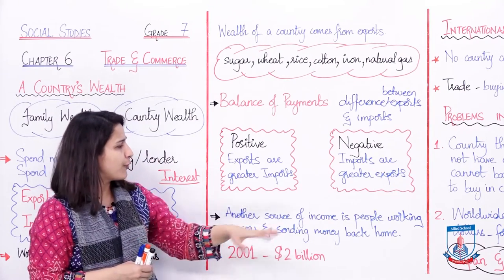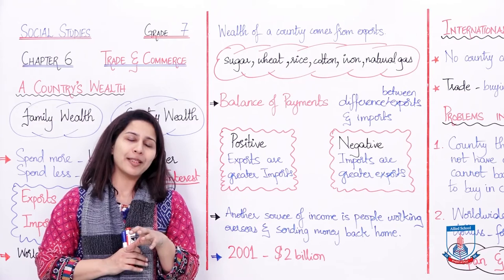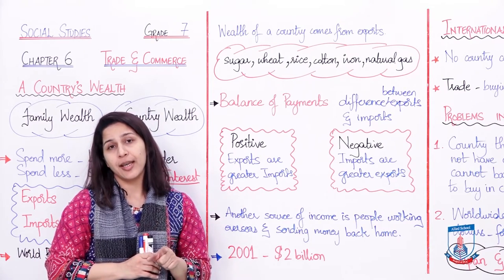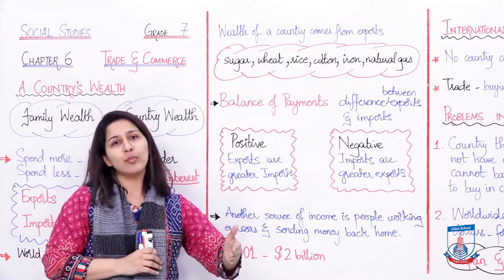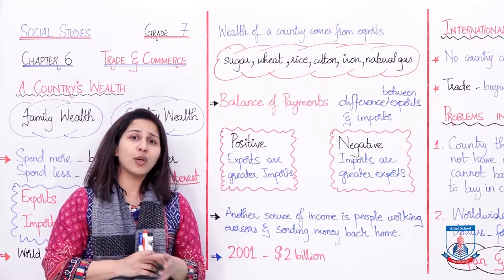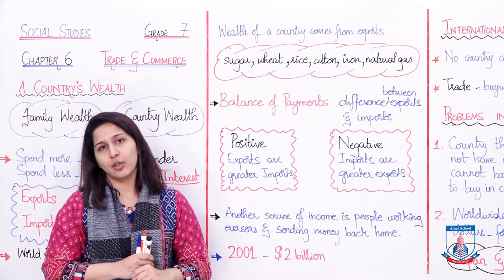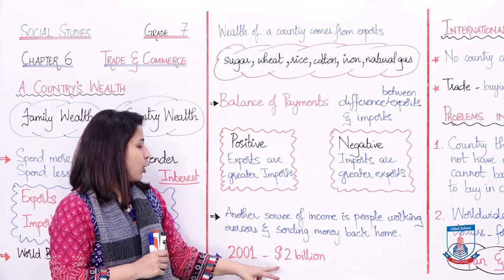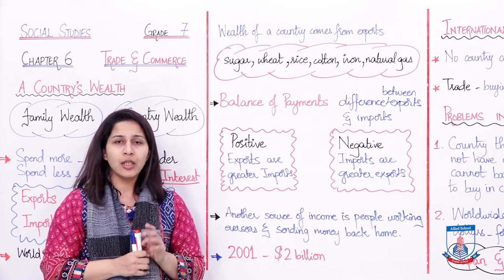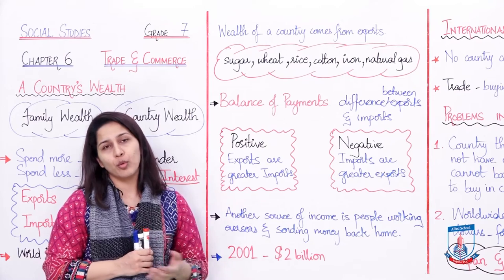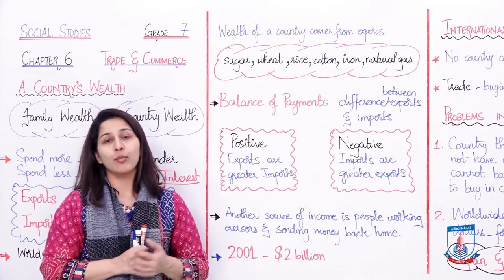Now, another source of income is people working overseas and sending money back home. National income ki agar hum baat karein, mulk ke paise ki baat karein, to ek aur source hai, ek aur zariah hai jahan se mulk ke andar paise aata hai. Woh zariah hai jab mulk ke log baahir dousre mulkon mein ja ke kaam karte hai — aur jab woh wahan kaam karte hai aur unko better paise milte hai, toh woh wapas apne gharon mein paise bhejte hai. So since we talk about national income, ye national income ka hissa ban jata hai. 2001 mein almost 2 billion dollars overseas Pakistanion ne — Pakistani citizens jo baahir ke mulkon mein reh ke kaam karte hai — unho ne approximately 2 billion dollars apne-apne gharon mein baahir ke mulkon se bheje.